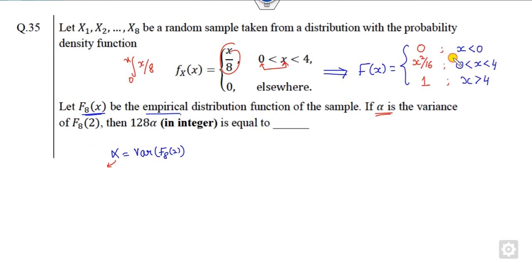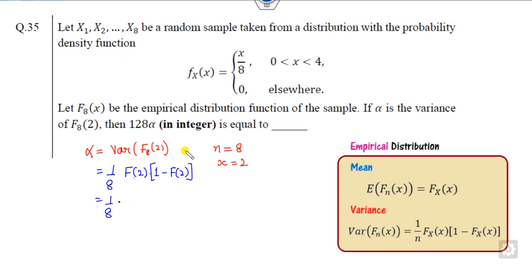You can see 2 lies here. So if you substitute, it is 4 by 16, that is 1 by 4. So if you substitute here, it is 1 by 4, 1 minus 1 by 4 is 3 by 4. So the answer is 3 upon 128.